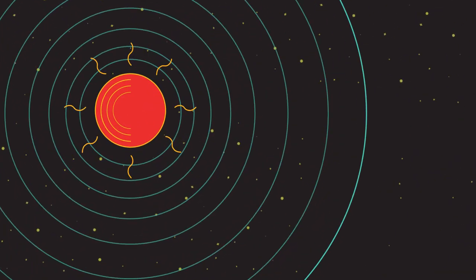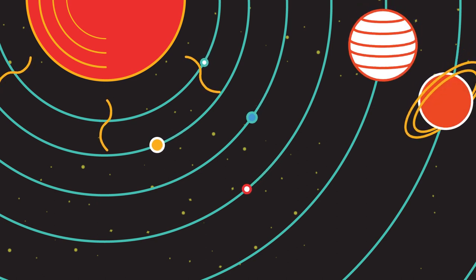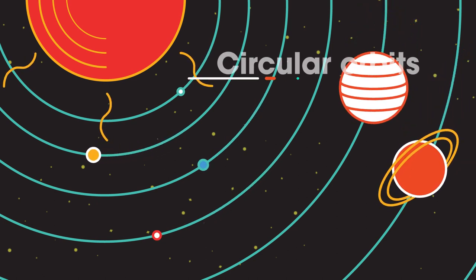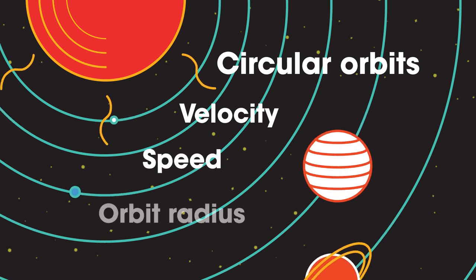In this video we're going to look at some ideas that are out of this world. We're going to look at circular orbits of planets, velocity, speed and orbit radius.